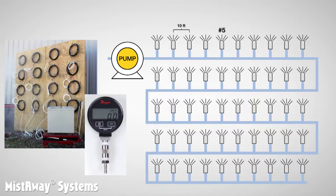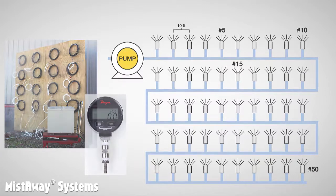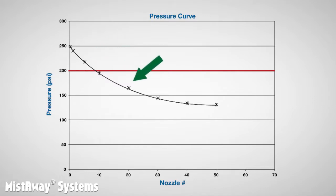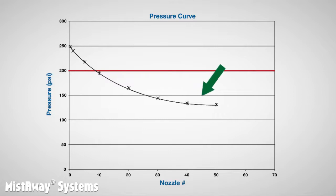We measured at nozzle number 5, nozzle number 10, nozzle number 15, and so on, until nozzle number 50, and then plotted a graph of the pressure on what we call a pressure curve. The 50-nozzle pressure curve starts at 250 psi at the pump, then slopes down pretty severely, and begins to flatten out at about nozzle number 30.